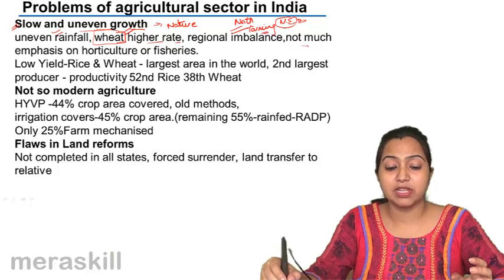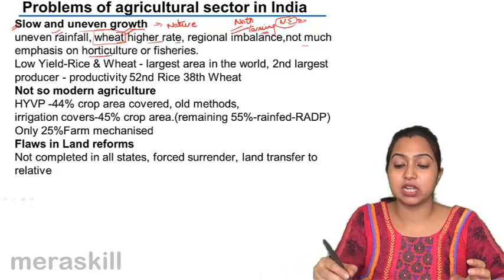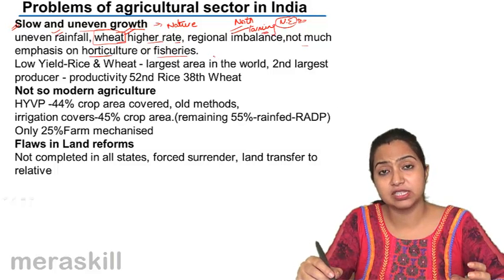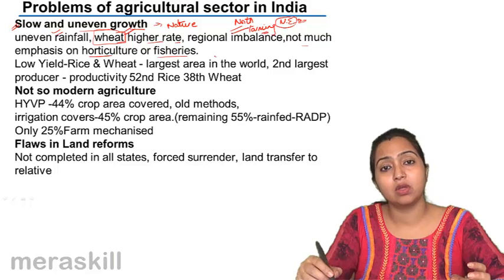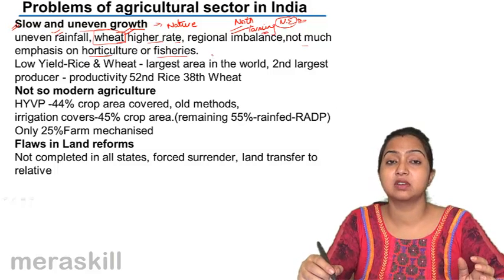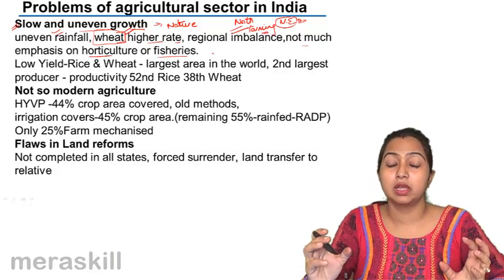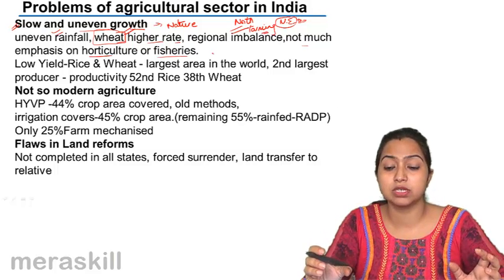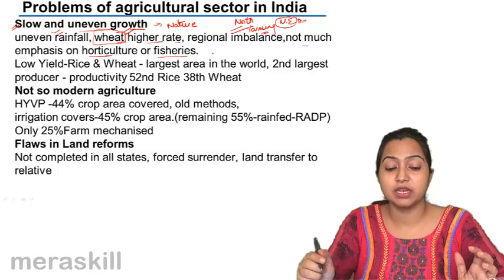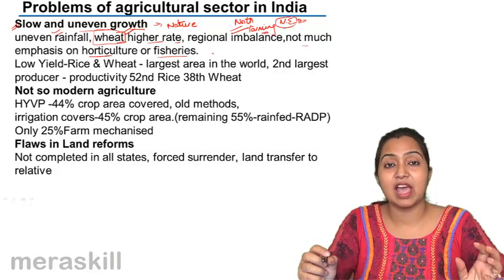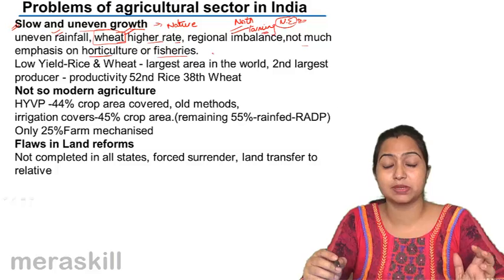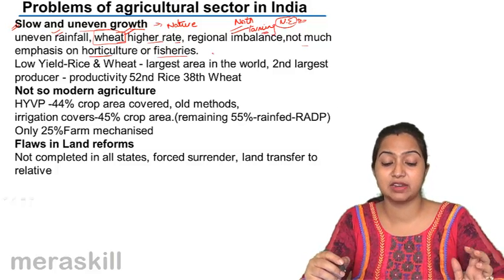Not much emphasis has been given on horticulture or fisheries. Horticulture covers flowers and all related produce. The government should emphasize more on increasing the production of vegetables, fruits, flowers, and dairy products, but they have lacked emphasis. More emphasis has always been on major cereals like rice and wheat.